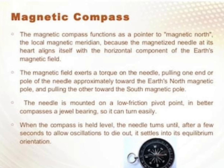अब जो magnetic field है, वो torque exert करती है needle के ऊपर — one end को pull करती है earth के north magnetic pole की तरफ, और दूसरे को earth के south magnetic pole की तरफ। Needle जो है, it is mounted on a low friction pivot point — in better compasses, a jewel bearing — so it can turn easily। When the compass is held level, the needle turns until after a few seconds, oscillations die out, and it settles into an equilibrium orientation।